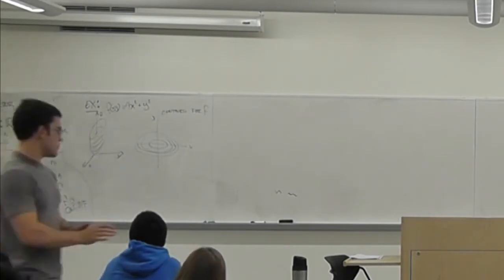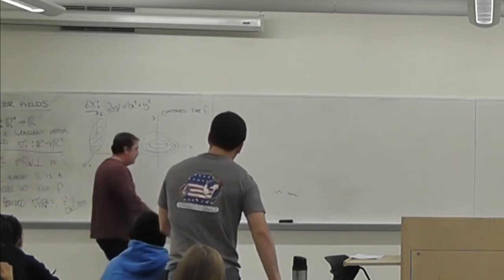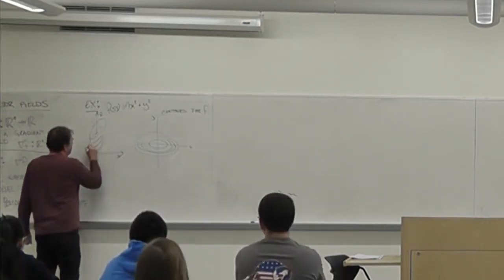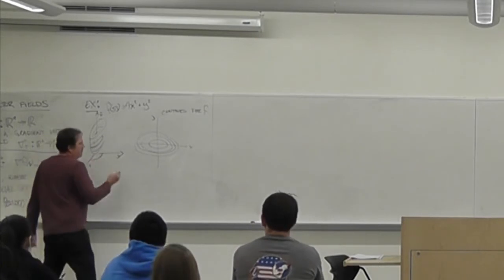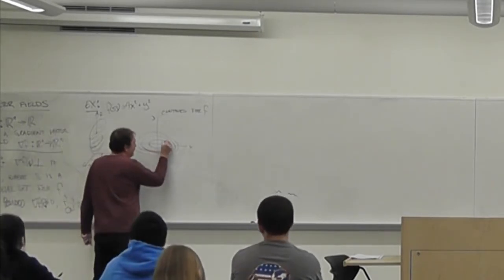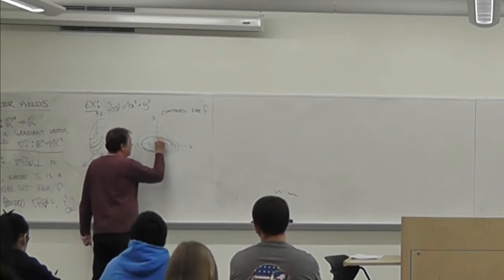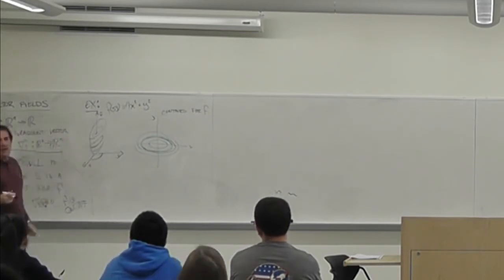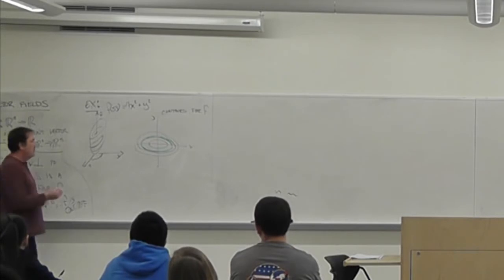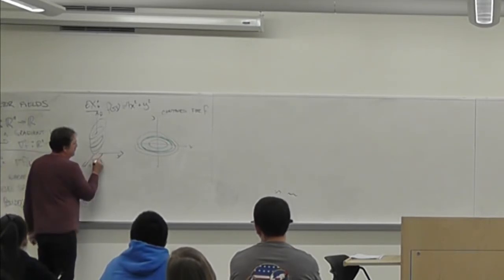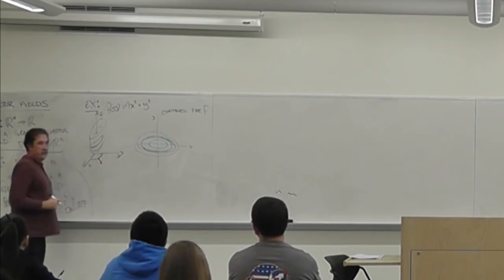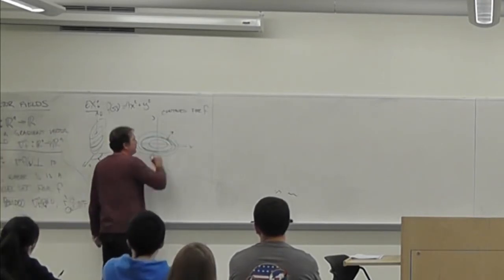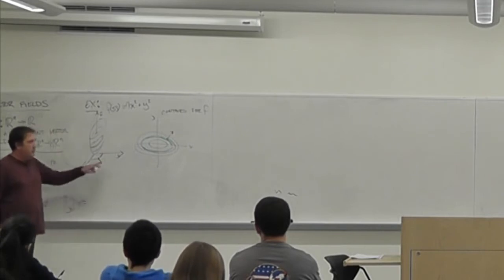The statement says that if I take any one of these level sets and take any point in that level set, as long as we're not at a point where the gradient is zero, the gradient is perpendicular to that level set.